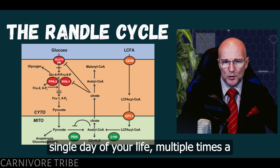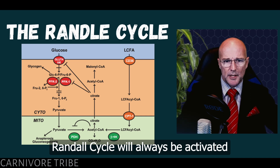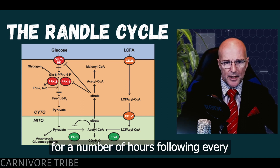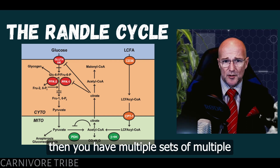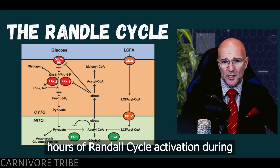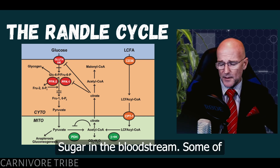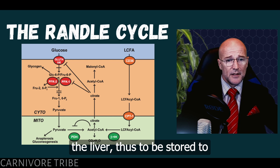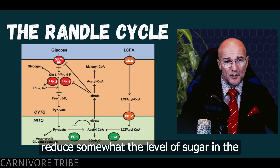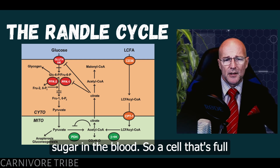However, if you eat carbohydrates every single day, multiple times a day, you're asking for a problem. The Randall cycle will be activated for a number of hours following every meal, and if that's multiple times a day, you have multiple sets of hours of Randall cycle activation. What happens is the excess sugar in the bloodstream is transmuted directly into fat at the liver, to be stored and to reduce somewhat the level and toxicity of sugar in the blood.